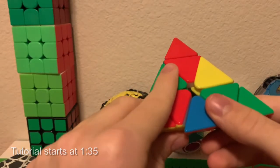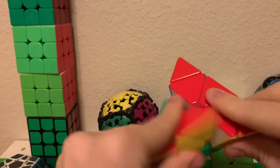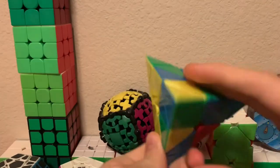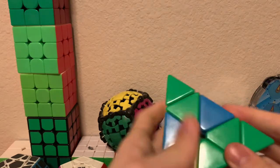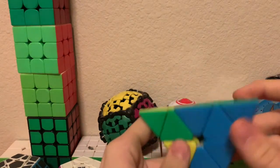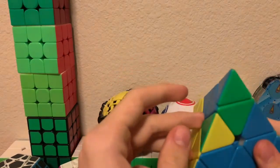Petrus is a method for Pyraminx where first you solve a bar which is called a backbone, then you orient the edges. I need to switch these two, and then you solve the rest of the cube 2gen.